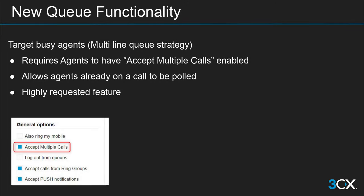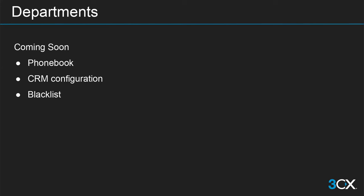Another new functionality added to queues is the ability to target busy users. In a queue, when you are servicing a customer you are focused on that customer and will not be notified for another incoming queue call. Previously, if you were on any other type of call — a direct external call, calling a colleague, or checking voicemail — the queue would consider you busy and not disturb you. However, many companies want agents focused on customers. So if a user has 'accept multiple calls' enabled in the queue, they will be notified for a second call even if already on another type of call.